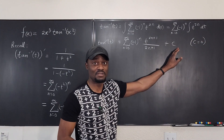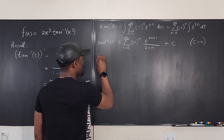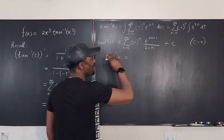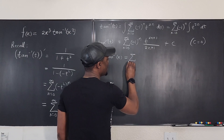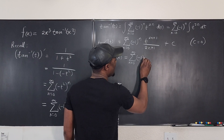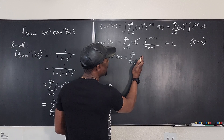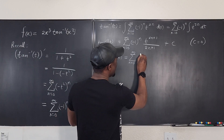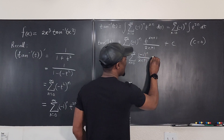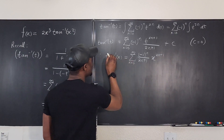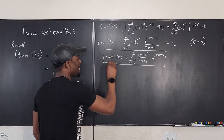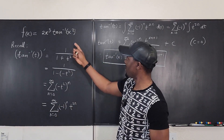Therefore, we can write arctan(x) as a power series — a polynomial in the limiting sense — starting from n=0: arctan(x) = sum from n=0 to ∞ of (−1)ⁿ/(2n+1) · x^(2n+1). This is the power series for arctan(x). But what we have in our function is not arctan(x); it is arctan(x²).